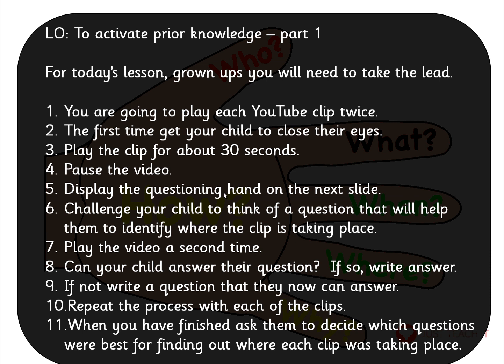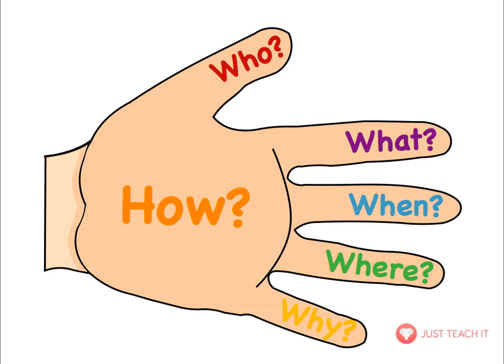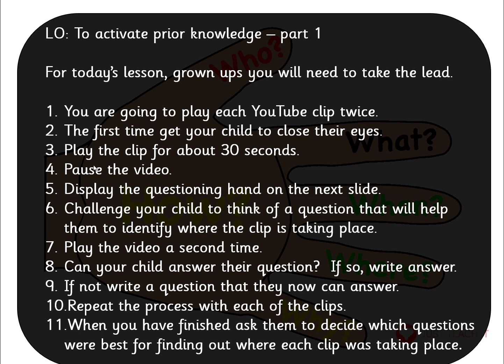Display the questioning hand on the next slide — I'm just going to move on to that. Now get your child to open their eyes and challenge your child to think of a question that will help them identify where the clip is taking place. Using those questions on the questioning hand, write down that question. Then play the video for a second time — play the full video if you want — and see if your child can answer that question. If so, write the answer.